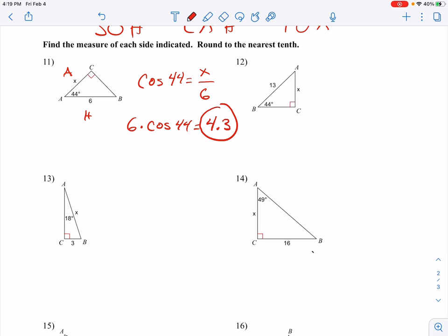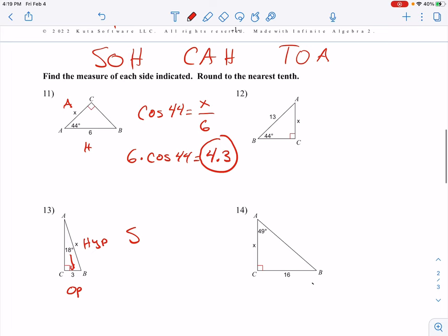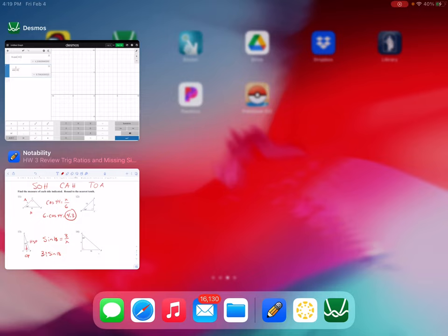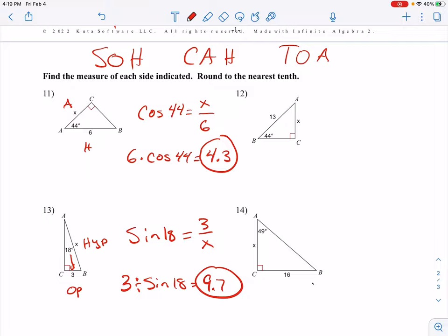Make sure you do number 12. Number 13. I have the opposite, opposite of the 18, and the hypotenuse. So, I'm going to use sine, SOH. The sine of 18 degrees is equal to 3 over x. x is down low. So, we divide. Up high, you multiply. Down low, you divide. 3 divide the sine of 18. 9.7.